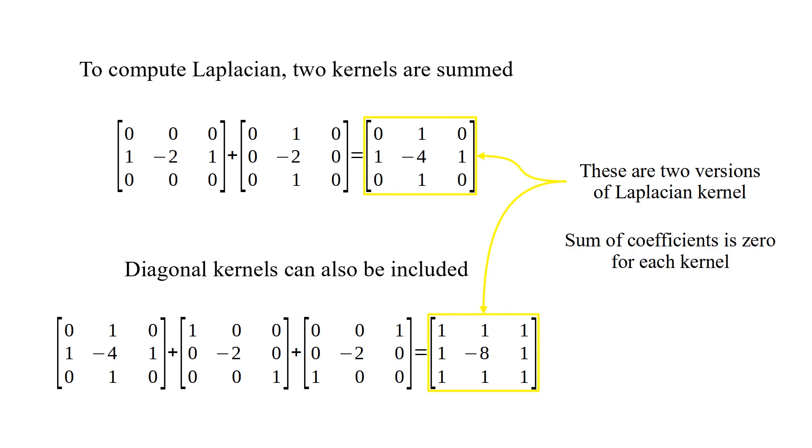The sum of coefficients is zero for each kernel. So, convolution outputs are zero for flat regions.